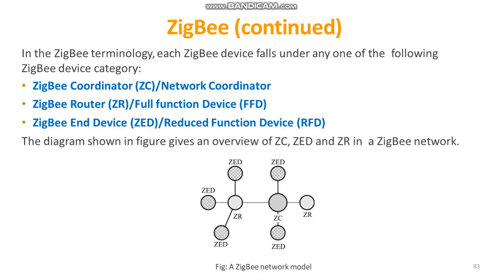In ZigBee terminology, a ZigBee device falls under one of three categories: ZigBee Coordinator (ZC), ZigBee Router (ZR), and ZigBee End Device (ZED). The ZigBee Coordinator acts as the root of the ZigBee network, responsible for initiating the network and storing information about it. The ZigBee Router passes information from one device to another. The ZigBee End Device has ZigBee functionality for data communication but can only talk with a coordinator or router and cannot act as a mediator for transferring data between devices. The diagram shows how ZC, ZR, and ZED are arranged in a ZigBee network.